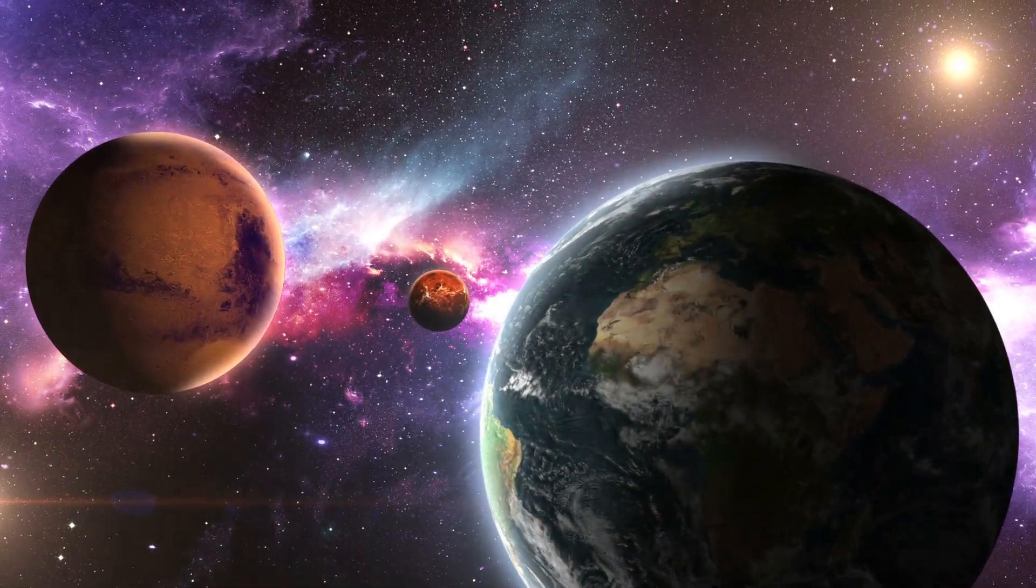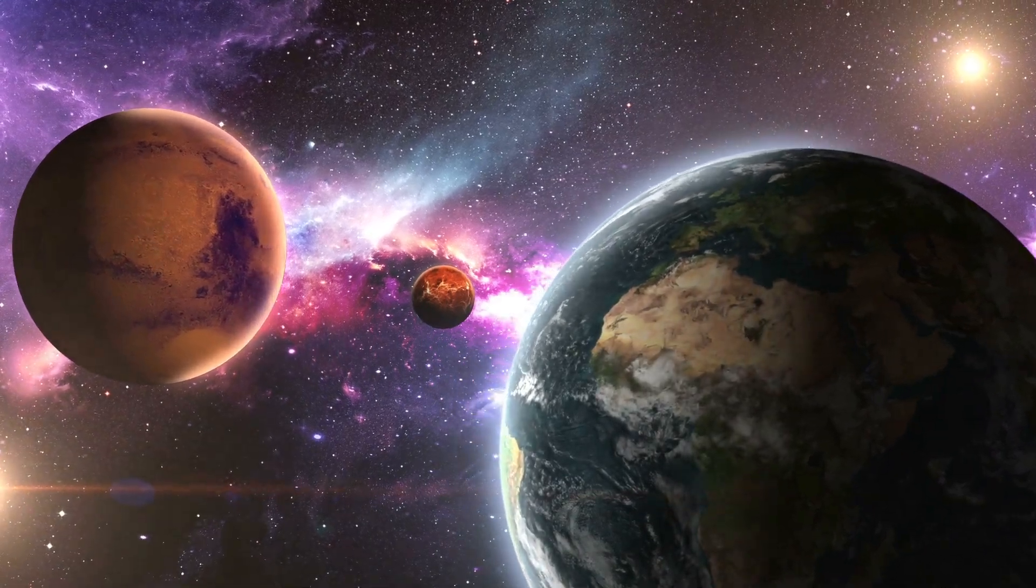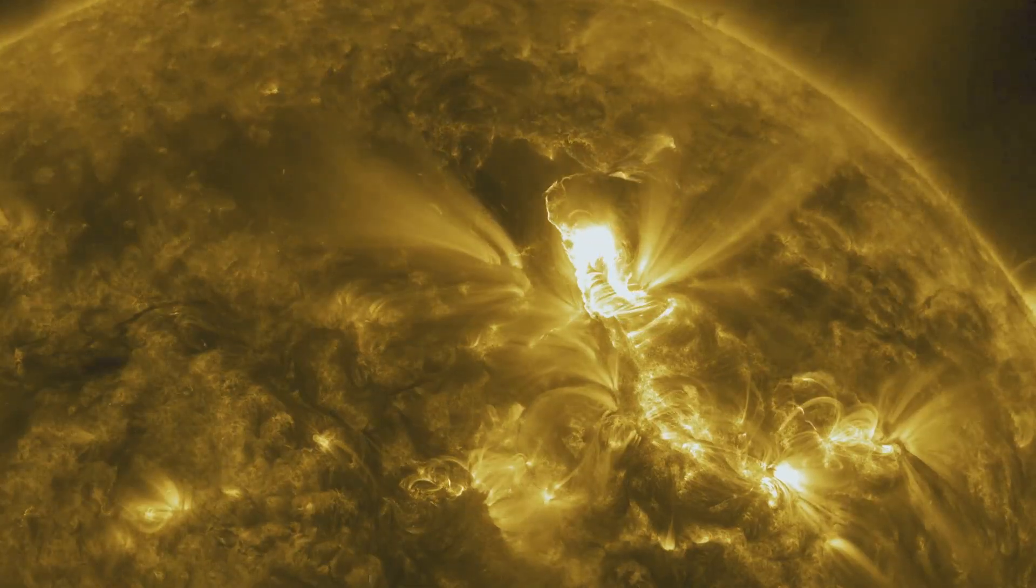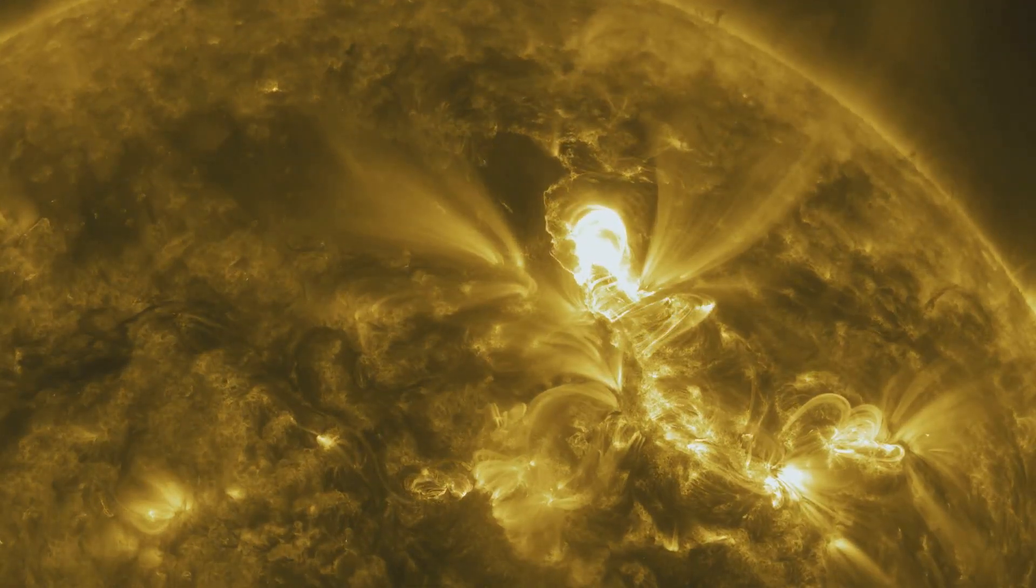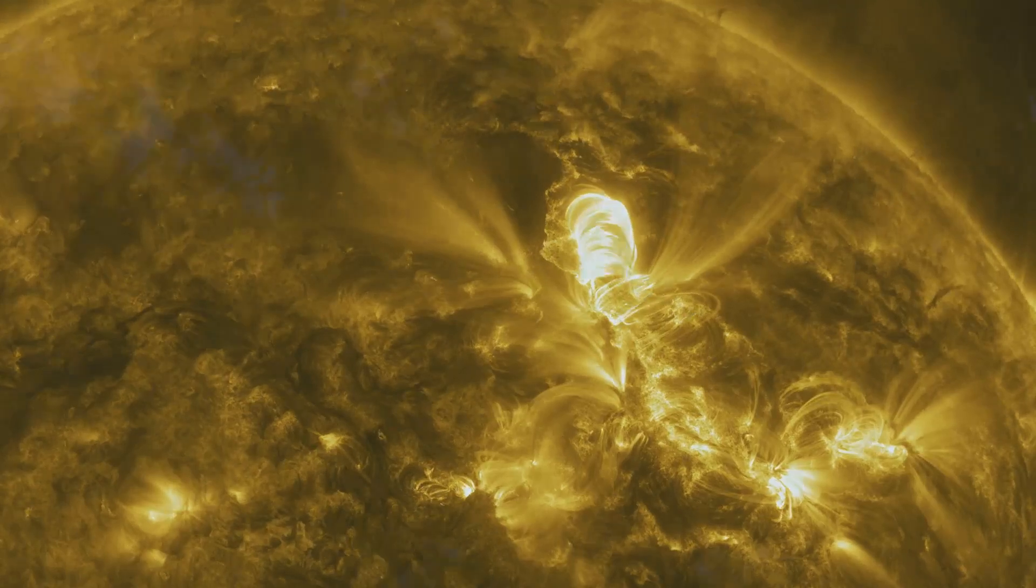Our solar system is a cosmic family, a vast and intricate dance of celestial bodies. At its heart is a star, the sun, a massive ball of burning gas that provides light and warmth.